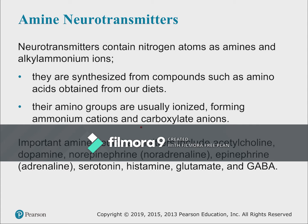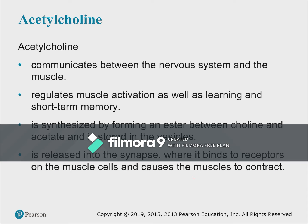Neurotransmitters are often amines in their alkyl ammonium ion form, usually forming salts with carboxylate or ammonium charged species. Key neurotransmitters we'll examine are acetylcholine, dopamine, norepinephrine, epinephrine, serotonin, histamine, glutamate, and GABA.